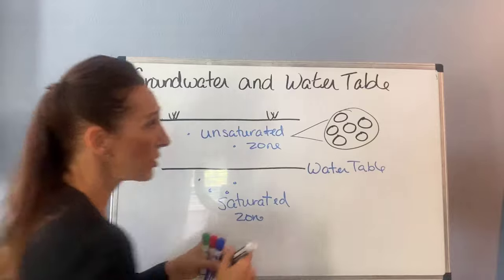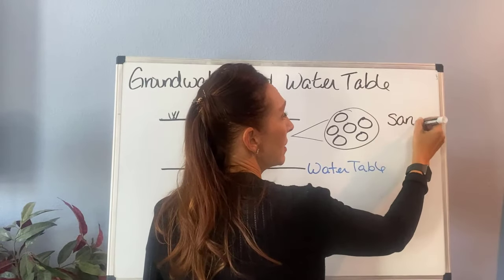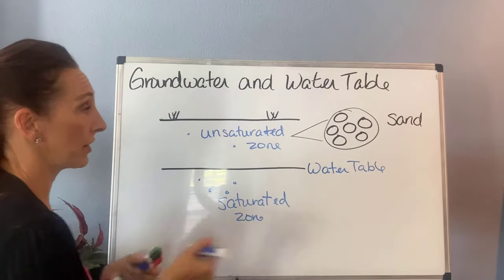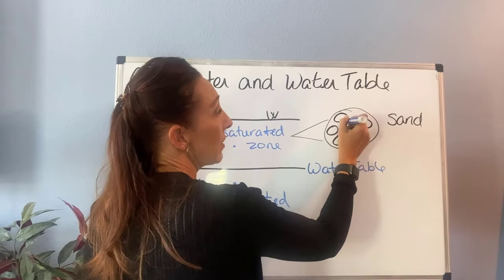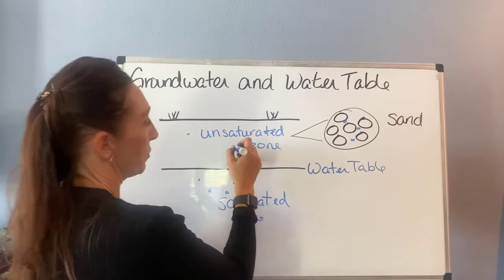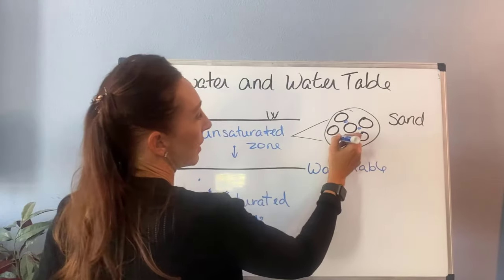I would have sand here and then some water in there—these little dots of water that are making their way down because they would be moving down due to gravity.